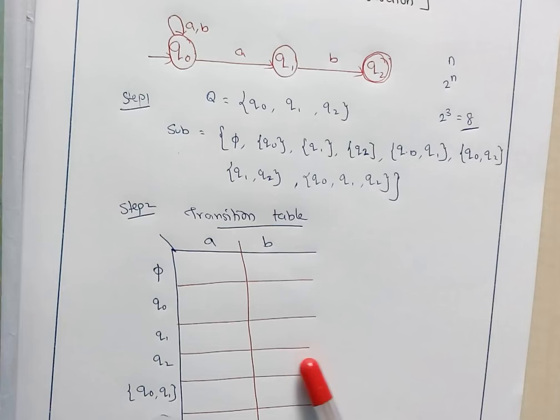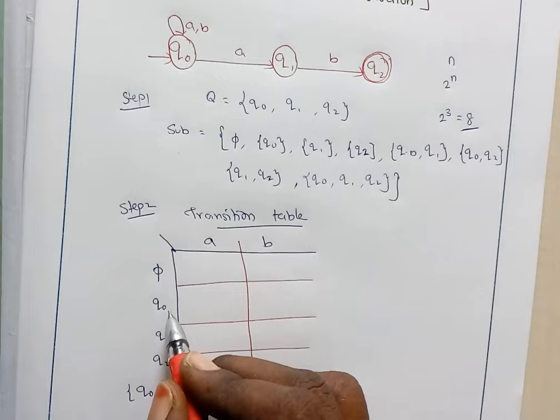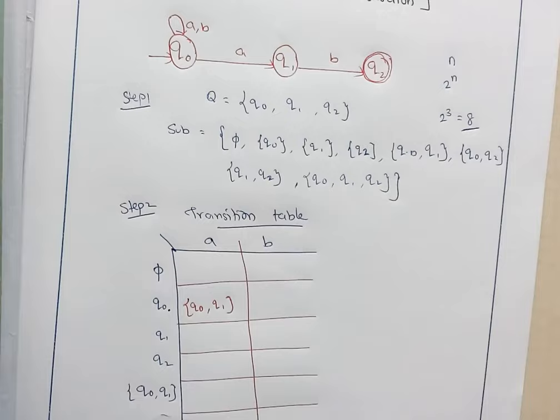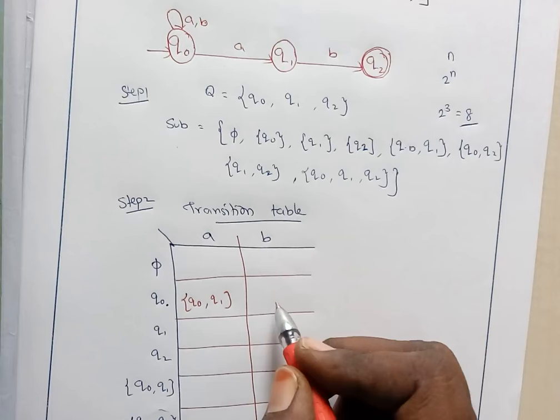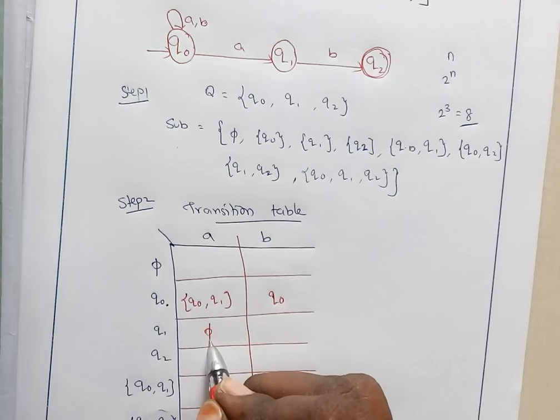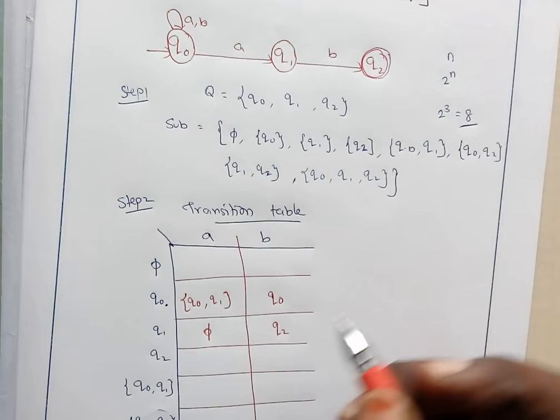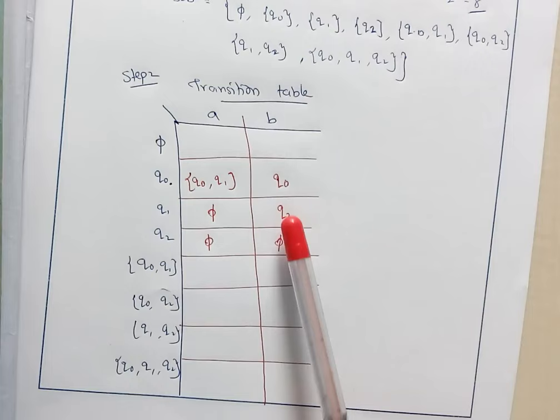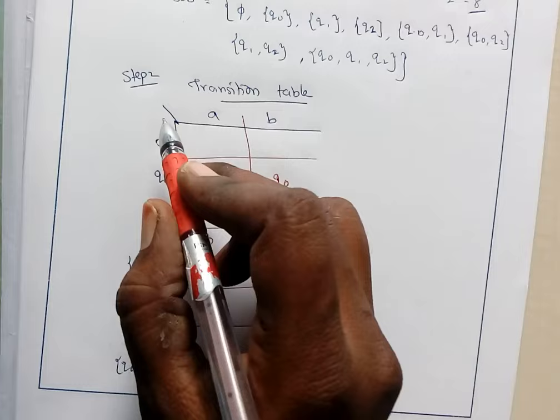Starting with Q0 on input A: we have two transitions — one stays in Q0 and one goes to Q1 — so it is {Q0, Q1}. Q0 on input B goes to Q0. For Q1 on input A, there is no transition, so it is the null set. Q1 on input B goes to Q2. For Q2, there is no transition on either input, so both are null. For the null state, transitions on both A and B are null. These transitions for Q0, Q1, and Q2 are copied from the NFA diagram.